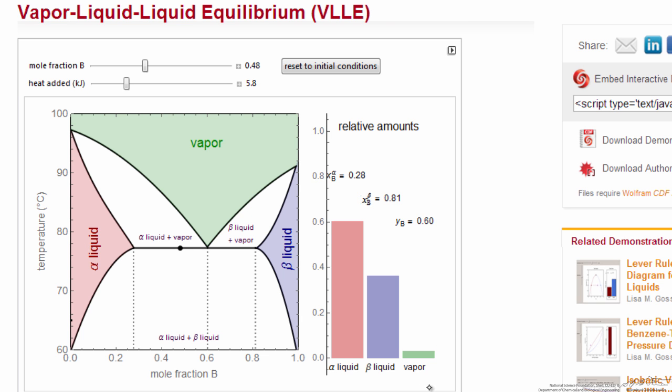We start to see some vapor forming, vapor in equilibrium with these two liquid phases. As I continue to add heat, notice I still have three phases. The point on the diagram doesn't move, but I'm getting more vapor. So one point on the diagram represents a large number of conditions with different amounts of alpha liquid, beta liquid, and vapor.